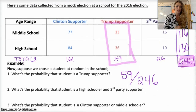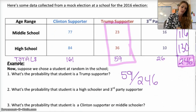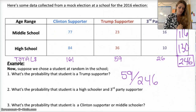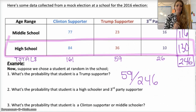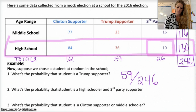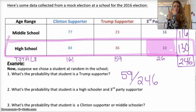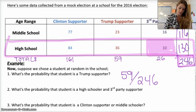Question two: what's the probability that the student is a high schooler and a third party supporter? We're looking at the high school row, and specifically the overlap — those 10 people who are members of the high school group and also the third party group. So we have 10 out of 246 as the probability for that one.